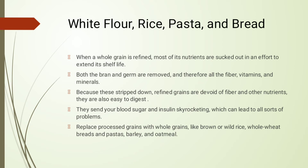Both the bran and the germ are removed, and therefore all the fiber, vitamins, and minerals. Because refined grains are devoid of fiber and other nutrients, they are easy to digest and send your blood sugar and insulin skyrocketing, which can lead to all sorts of problems. Replace processed grains with whole grains like brown rice, whole wheat bread, whole wheat pastas, and barley.